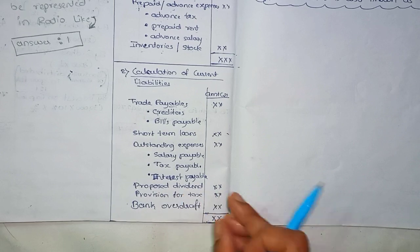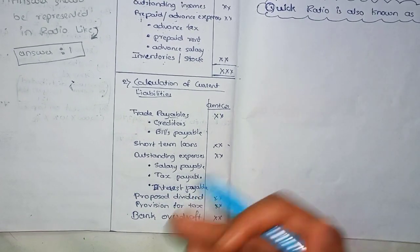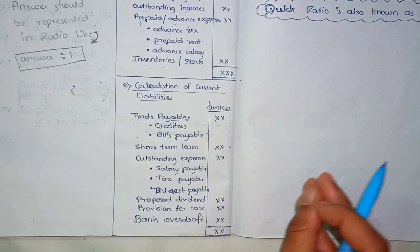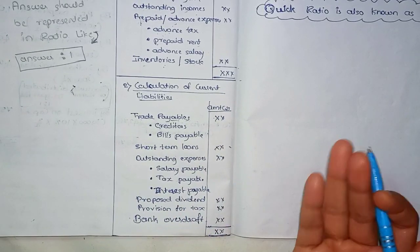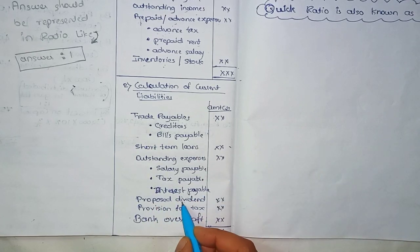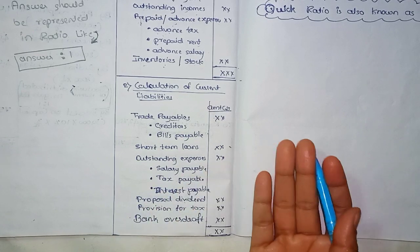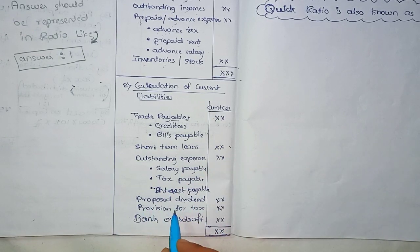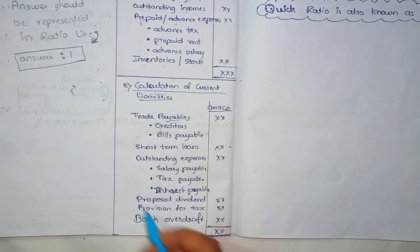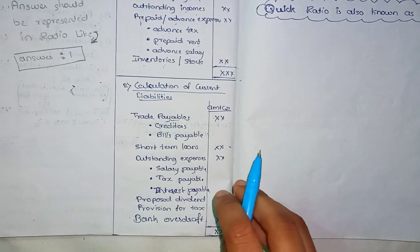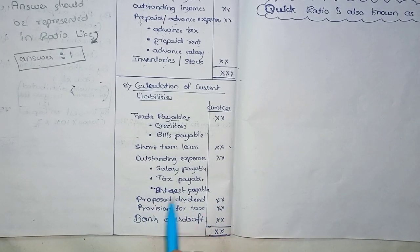Next, proposed dividend — this is a dividend announced to shareholders. Any provision is also a liability.